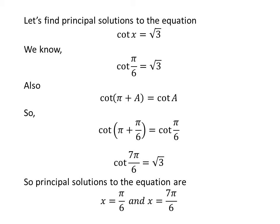So, the principal solutions to the equation cot x = √3 are π/6 and 7π/6.